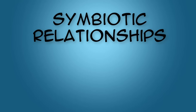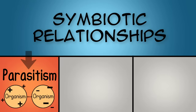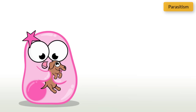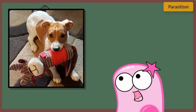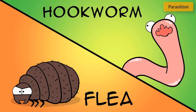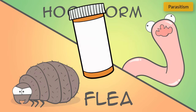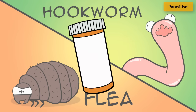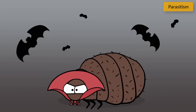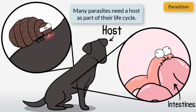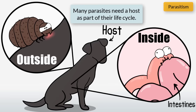Symbiotic relationships are specific types of relationships where different species live together. Parasitism is an example of a symbiotic relationship where one organism benefits and the other is harmed. For example, when my family took in our rescue dog, she was four months old and we learned from the vet that she would need to be treated for fleas and hookworms. We were able to give her medicine to treat these parasites — a good thing, because these parasites can hurt the dog by feeding on their blood. A parasite is an organism that gets its nutrients from another organism and causes harm to its host, and they can live inside or on their host.